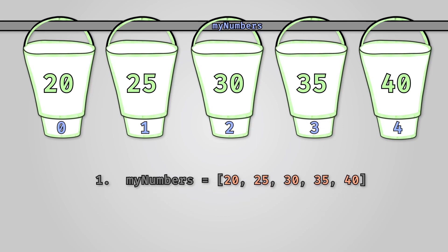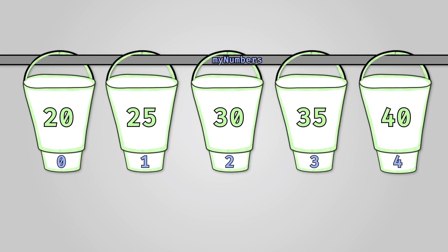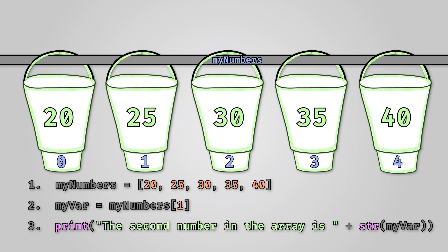To get data out of an array we would use the index of each element. Let's look at the array we have just created called myNumbers. So looking at this, element one contains the number 25. If we wanted to print this out we could say this. We could also get the contents of the array, store it in a variable, and print the variable out. In Python this might look like this.